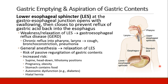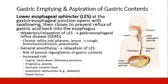There is a lower esophageal sphincter at the gastroesophageal junction. It opens when you swallow and then closes to prevent reflux of gastric acid back into the esophagus. If the lower esophageal sphincter becomes weak or relaxed, we get gastroesophageal reflux disease. Chronic reflux into the pharynx and larynx can lead to cough, bronchoconstriction, and even pneumonia.